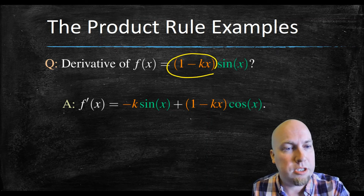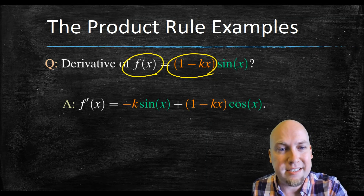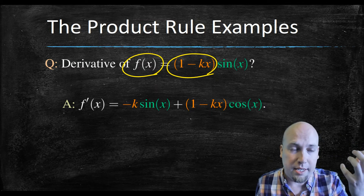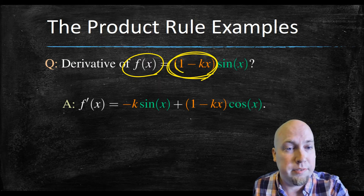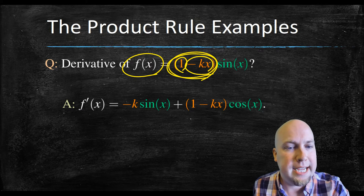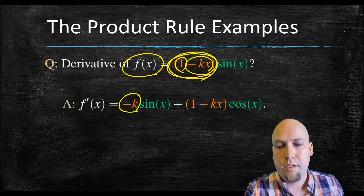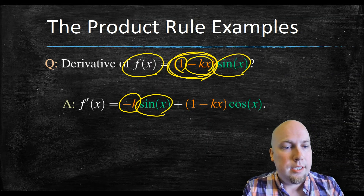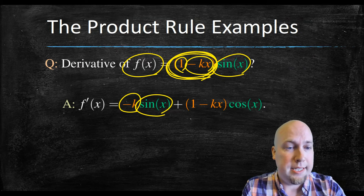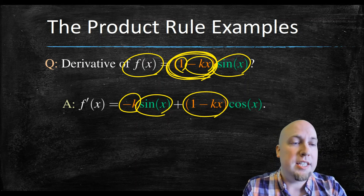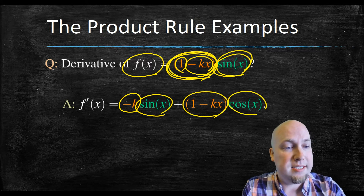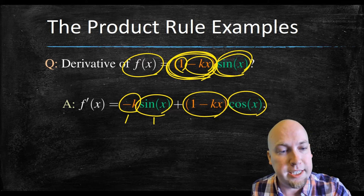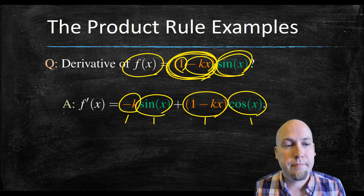The derivative of 1 minus kx — k is a constant, so it doesn't depend on x. The derivative of 1 is 0, and the derivative of minus kx is just minus k, so that gives minus k times sine of x. Then plus the first function, 1 minus kx, times the derivative of sine x, which is cosine x. Those are the four pieces of the product rule: f prime times g plus f times g prime.